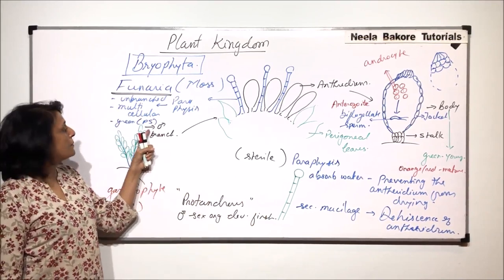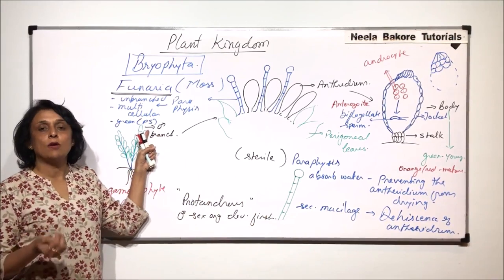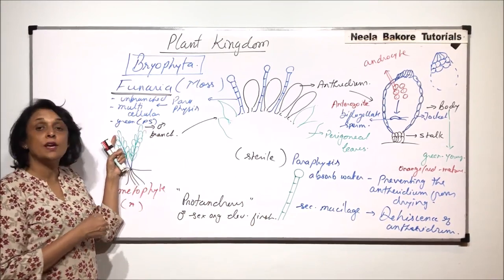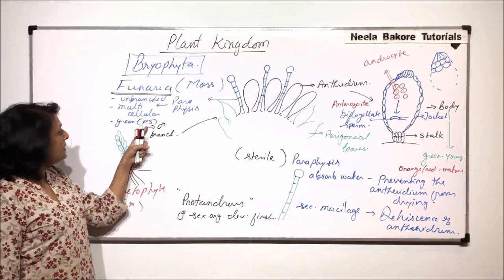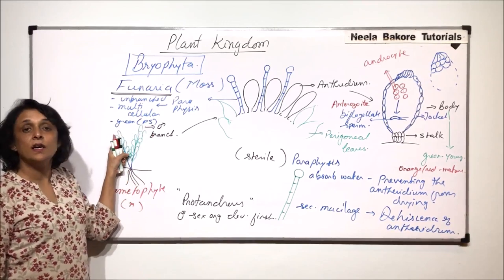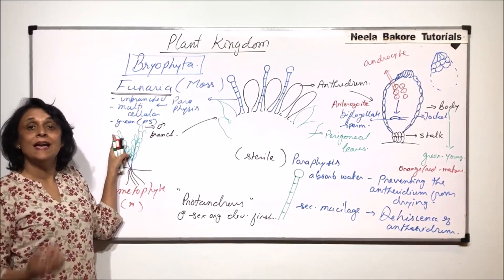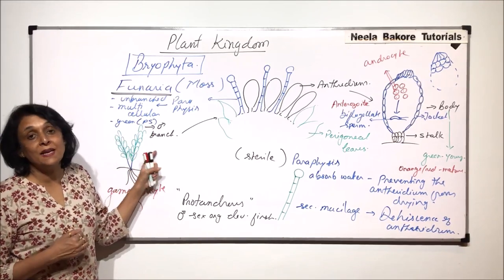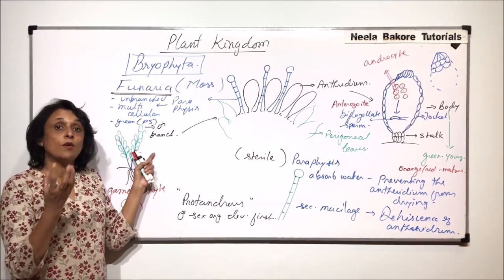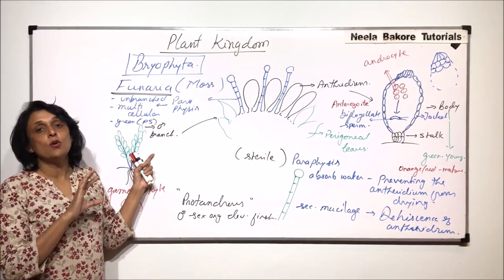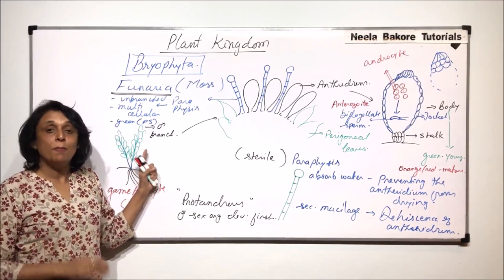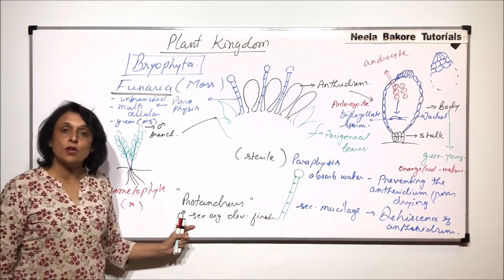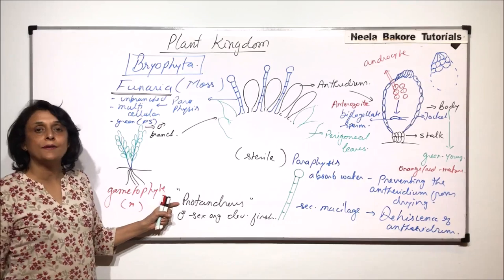This is an adaptation to ensure cross fertilization. Say if male sex organs and female sex organs mature at the same time, the male gametes can swim up to the female head and fertilization can take place. That means here the genes are of the same plant, so there is no cross fertilization. But in order to favor cross fertilization, they are protandrous.